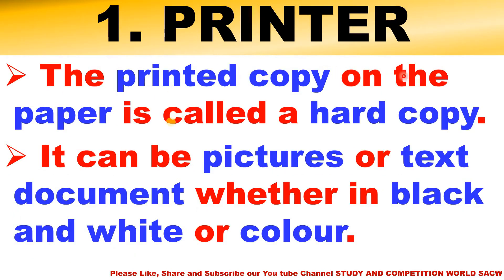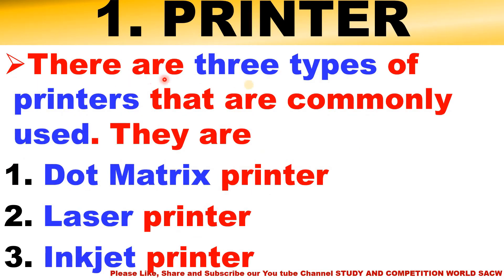The printed copy on paper is called a hard copy - this question may arise in your exam. A hard copy can be pictures or text documents, whether in black and white or color. You can see print-outs in a photocopy shop. There are three types of printers commonly used: first is dot matrix printer, second is laser printer, third is inkjet printer.